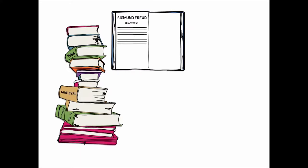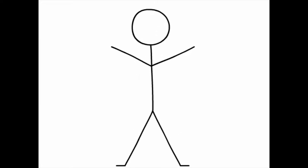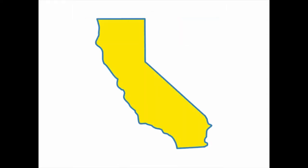First, we should discuss what the Melville Catalog is. As a UCLA student, if you are looking for books, articles, media, or newspapers, you can either search for them within the UCLA Library Catalog or Melville. Melville is the catalog that all of the UC campuses, as well as many other libraries around the world, use.